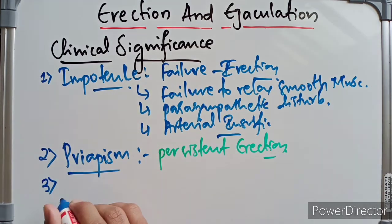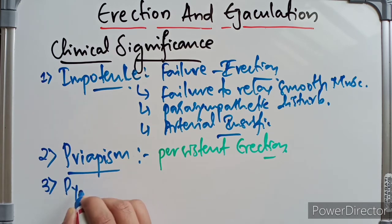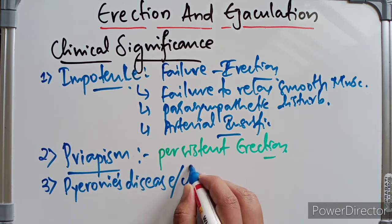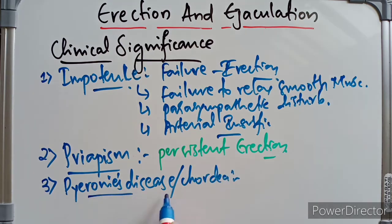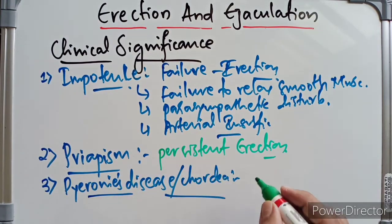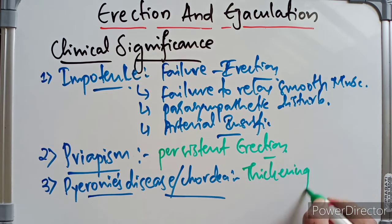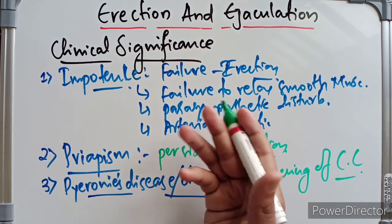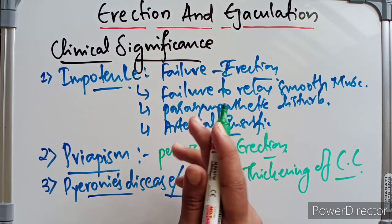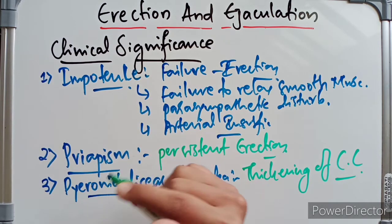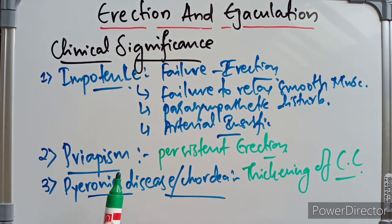The third condition is Peyronie's disease, also called chordae. It occurs due to localized thickening or plaque of the corpora cavernosa. This prevents expansion of the affected segment of erectile tissue during erection, causing the penis to become curved during erection rather than straight.